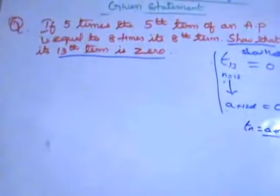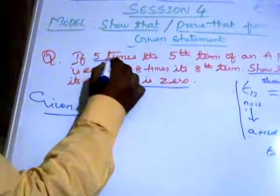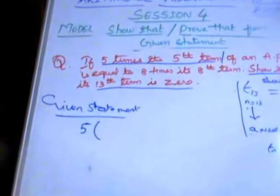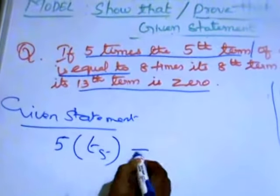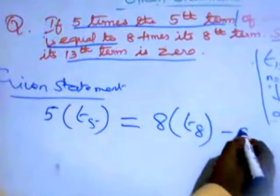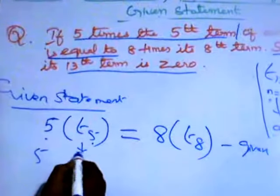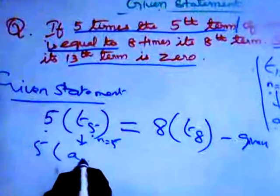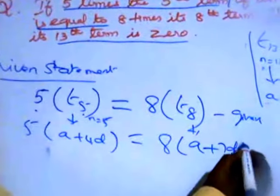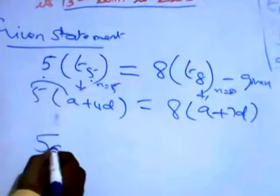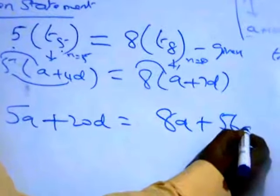Now the given statement: 5 times the 5th term — 5 into T5 of an AP — is equal to 8 times the 8th term. So 5 into T5, where n equals 5, gives a plus 4d. And 8 into T8, where n equals 8, gives a plus 7d. When you multiply, you get 5a plus 20d equals 8a plus 56d.